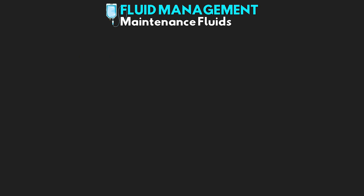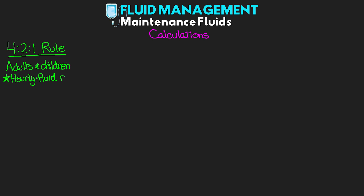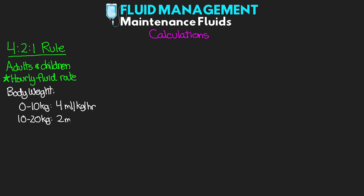Let's talk about calculations to determine our patient's fluid needs. The first is the 4-2-1 rule, developed to calculate fluid needs for both adults and children, giving us an hourly fluid rate. For the first 10 kilograms of body weight, we give 4 mL/kg/hour. For the next 10 kilograms, we give 2 mL/kg/hour. For everything over 20 kilograms, we give 1 mL/kg/hour.